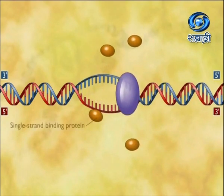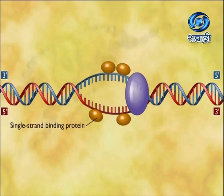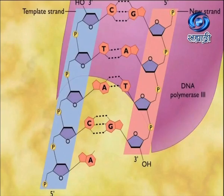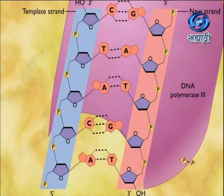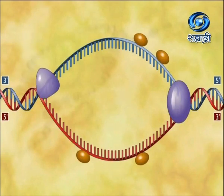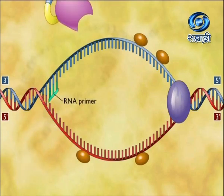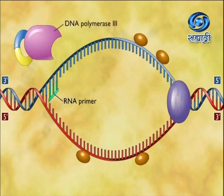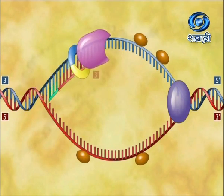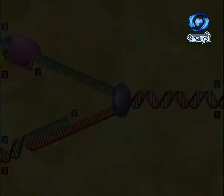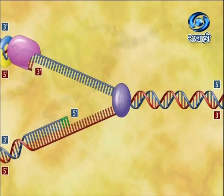The helicase enzyme is here — that is why the two DNA strands are separating from each other. Single-stranded binding protein is there, which prevents attraction between the two DNA strands. Now the complementary nucleotides are brought in one by one. With the help of DNA polymerase enzyme, synthesis of the new DNA strand proceeds from the fifth carbon atom to the third carbon atom. That is why continuous new DNA strand synthesis is occurring — this is called the leading strand.